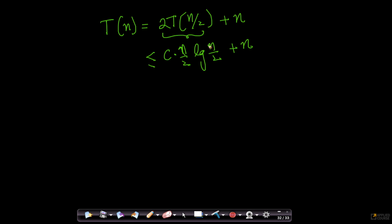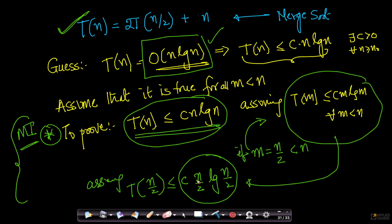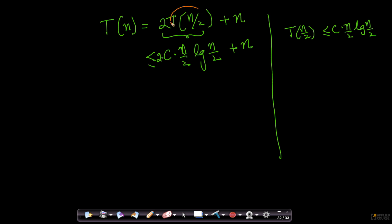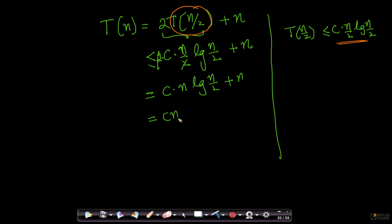Why less than or equal to? Because T(n/2) is being replaced by an upper bound. The 2s cancel, giving c·n·log(n/2) + n. Using log(a/b) = log a − log b, this equals c·n·(log n − log 2) + n. Since log₂(2) = 1, this becomes c·n·log n − c·n + n.